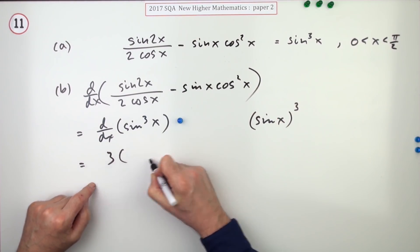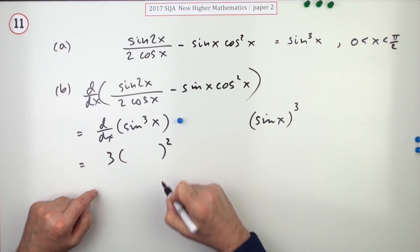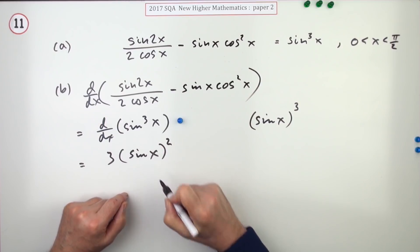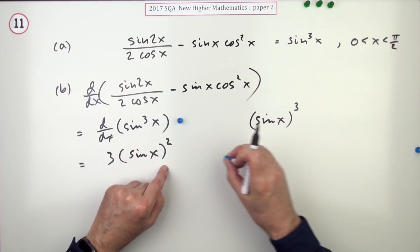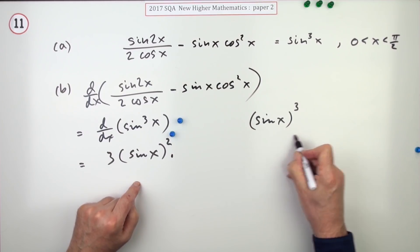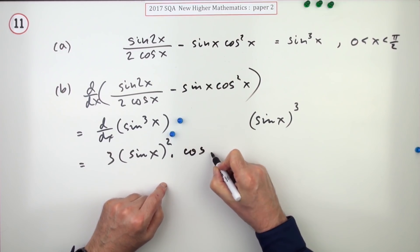And what was inside was a sine x. Doing that, it says, gets the first mark. And then multiply by the derivative of the inside, which is a cos x.